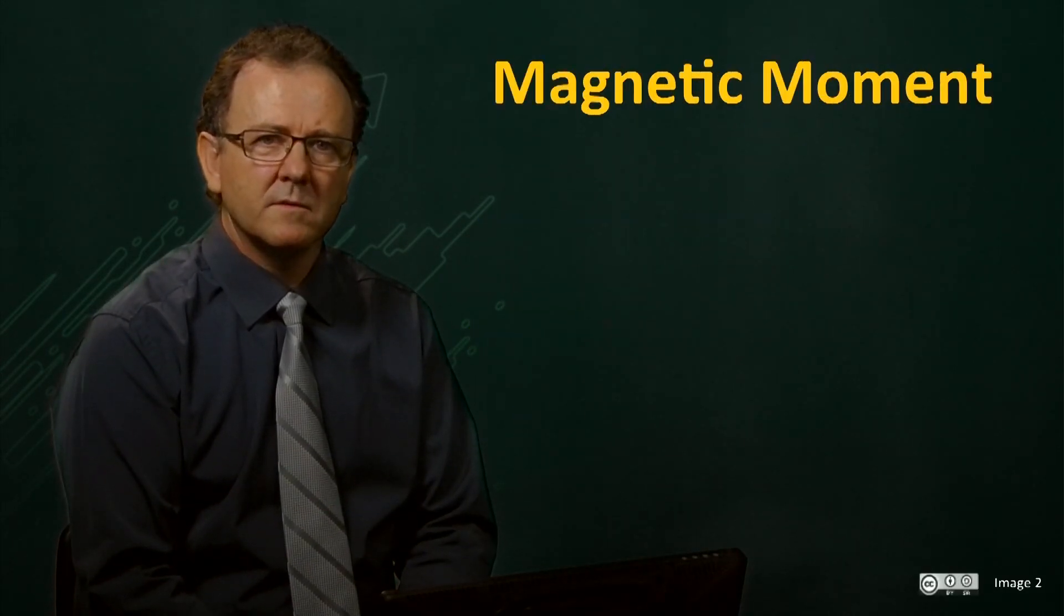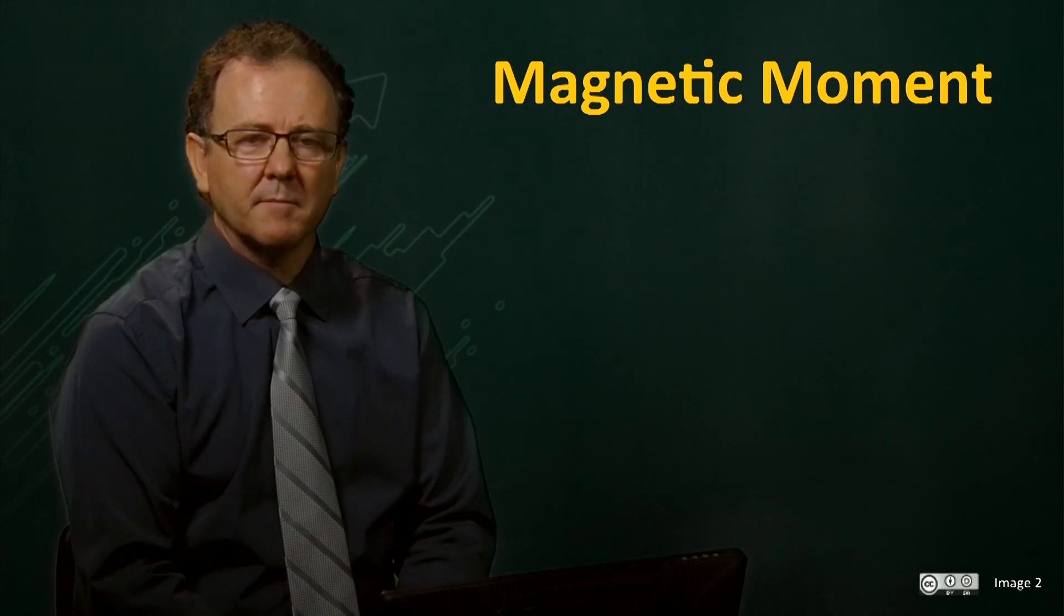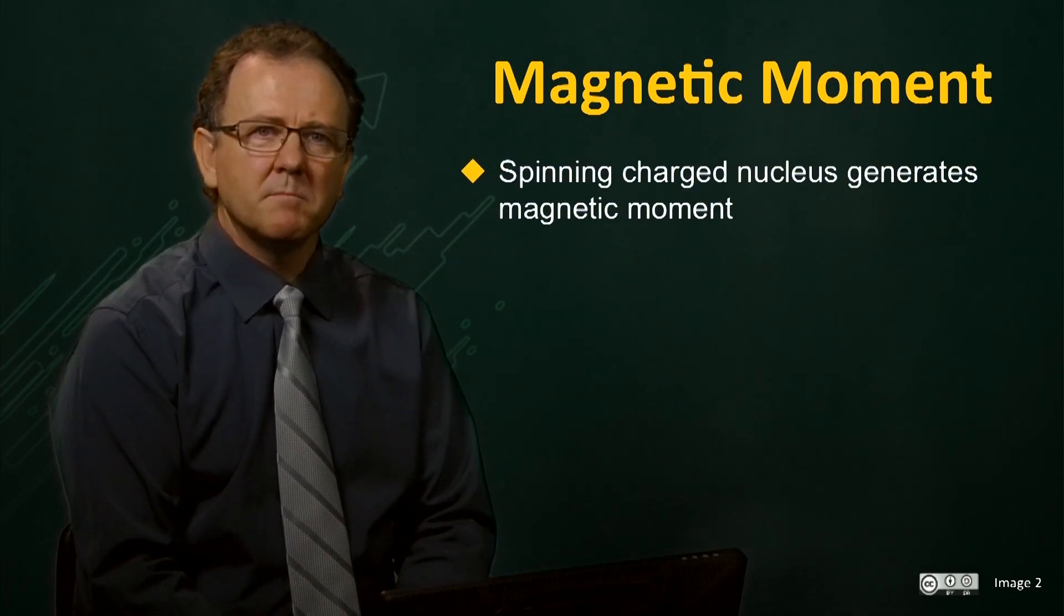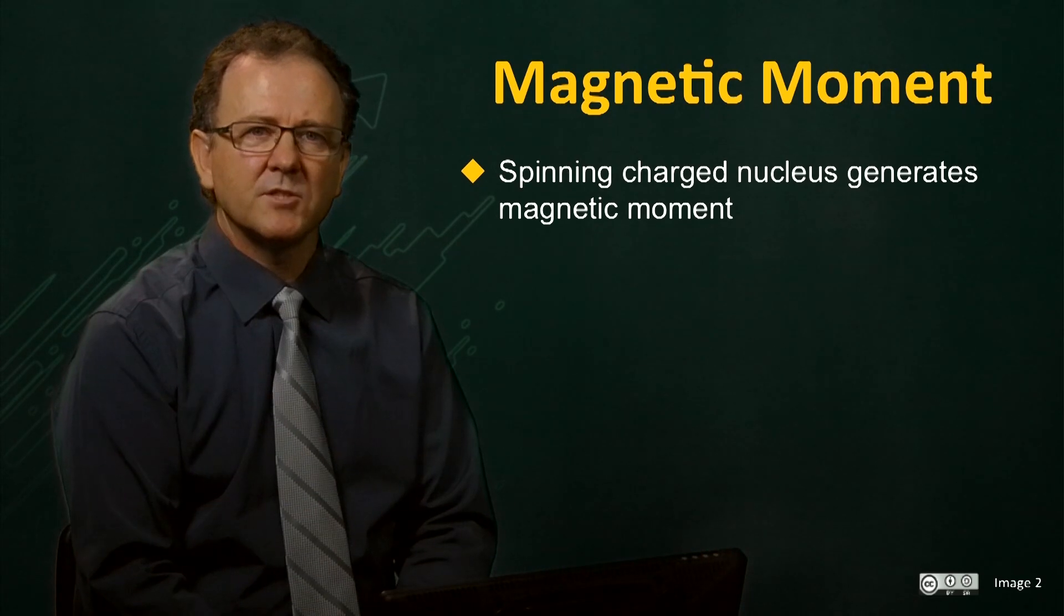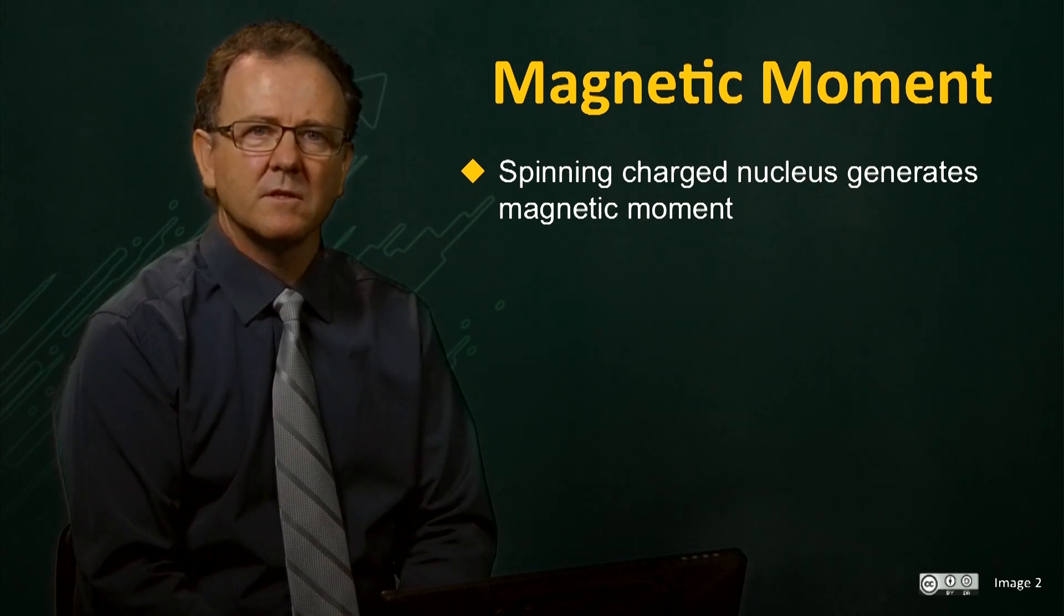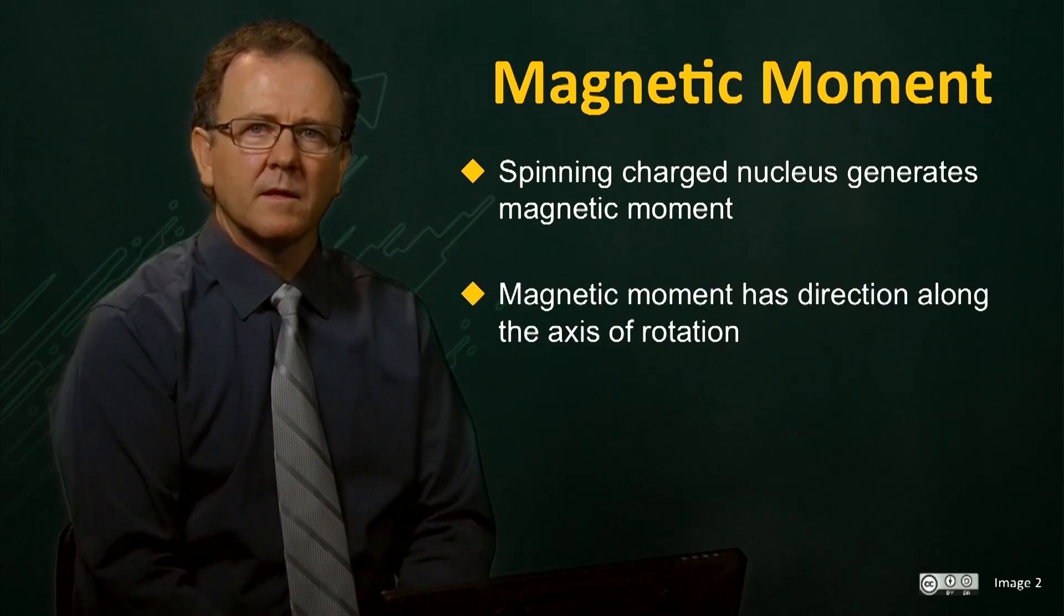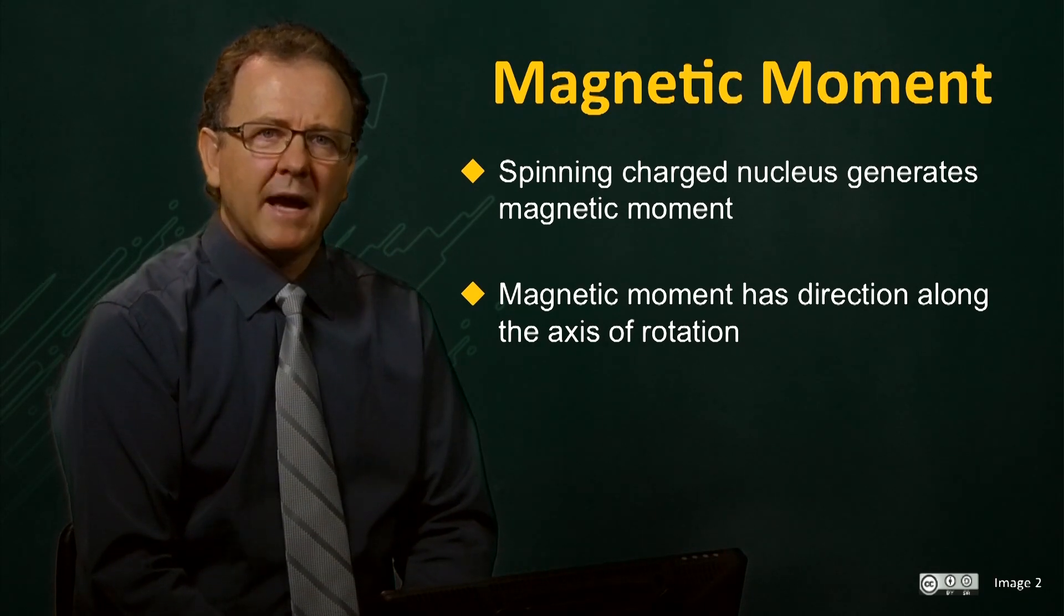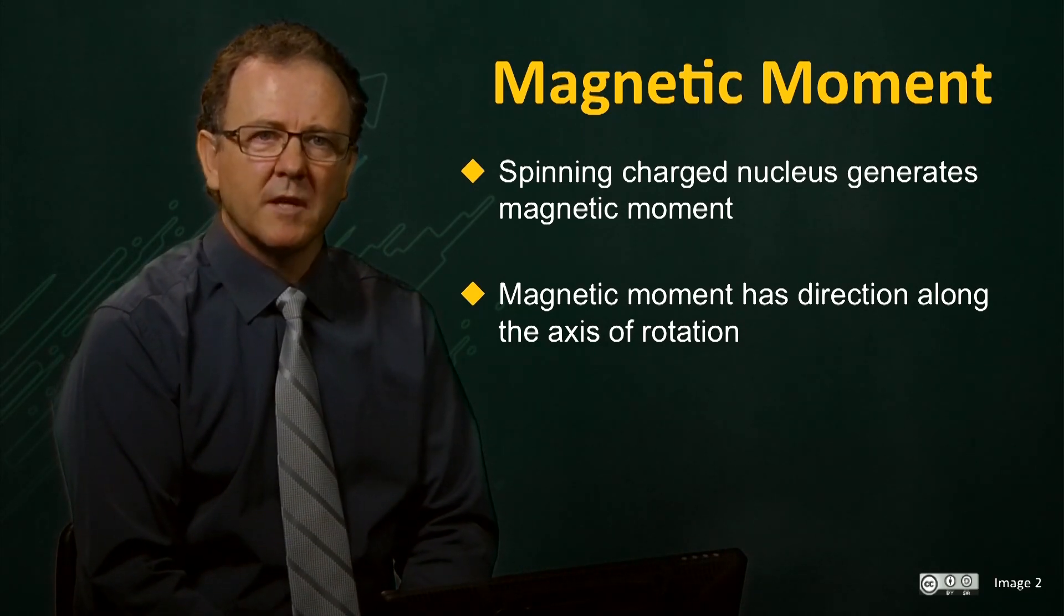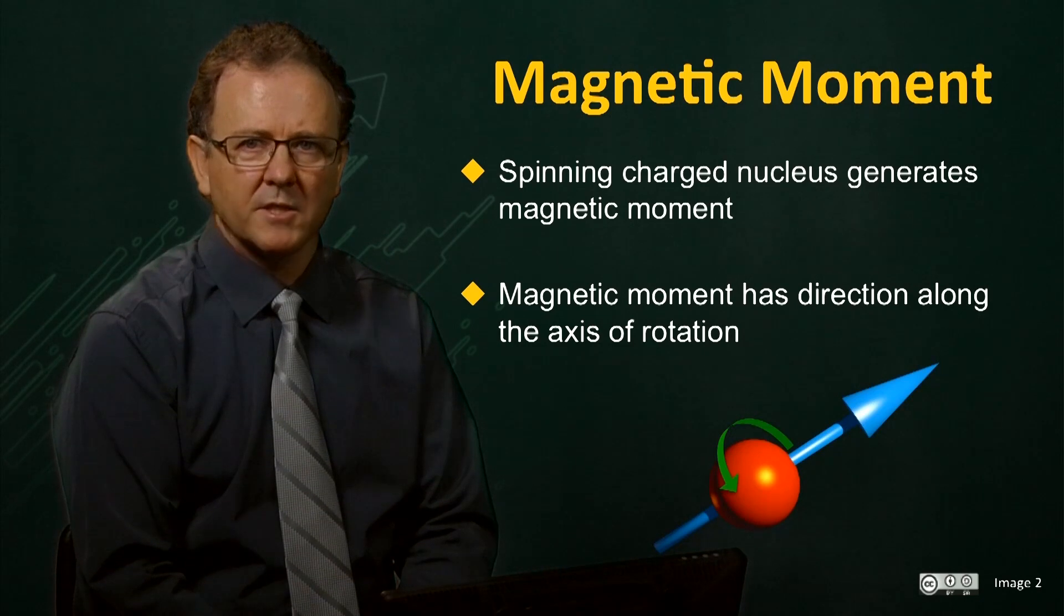As a spinning charged particle, the proton generates a magnetic moment, and this moment has a direction that is along the axis of rotation of the spin. It is the behavior of these magnetic moments that we observe during an MRI scan.